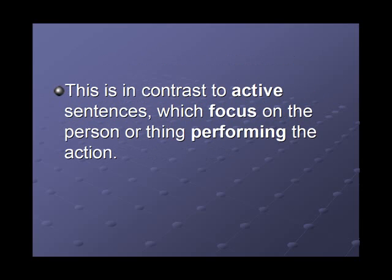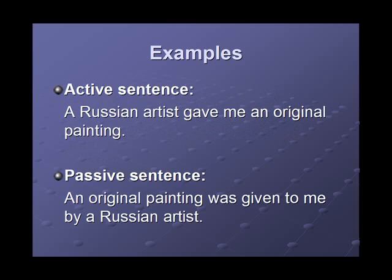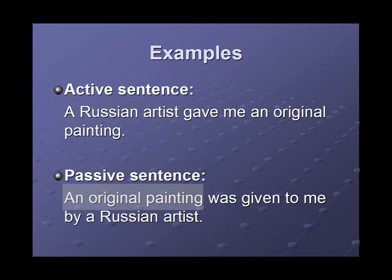This is in contrast to active sentences, which focus on the person or thing performing the action. Here are some examples. Active sentence: a Russian artist gave me an original painting. Passive sentence: an original painting was given to me by a Russian artist. The sentences have the same basic information but different subjects, because they focus on different things. In the active sentence, the focus is on the performer — the artist. In the passive sentence, the focus is on the painting, which receives the action.